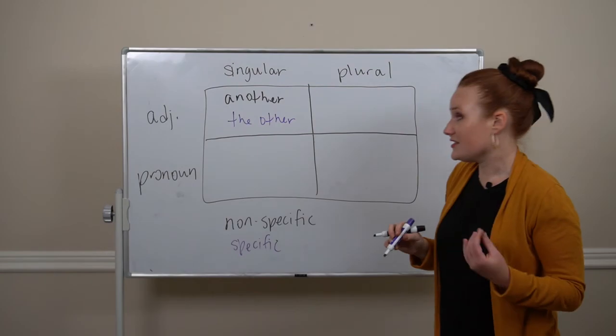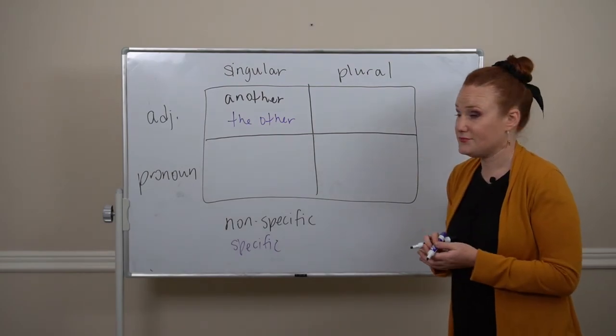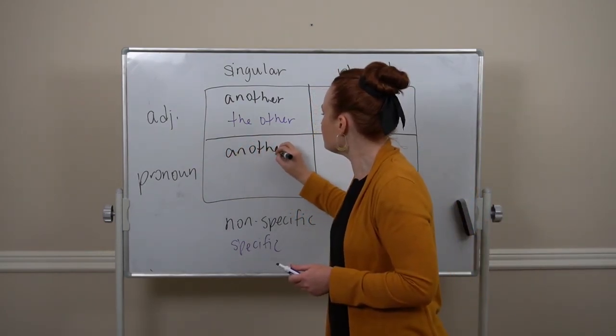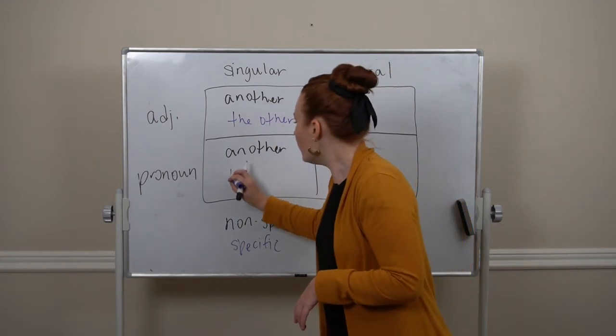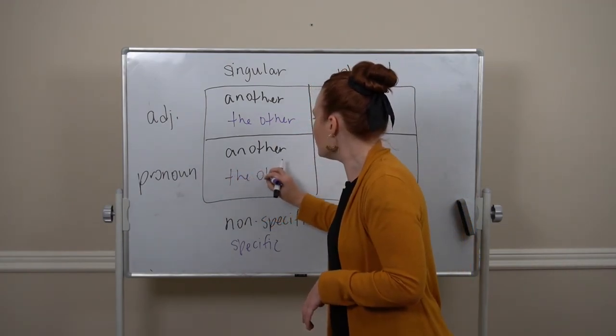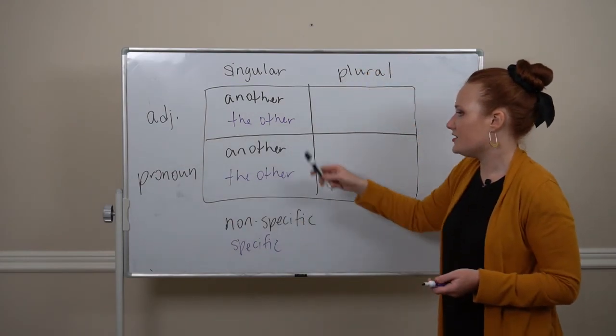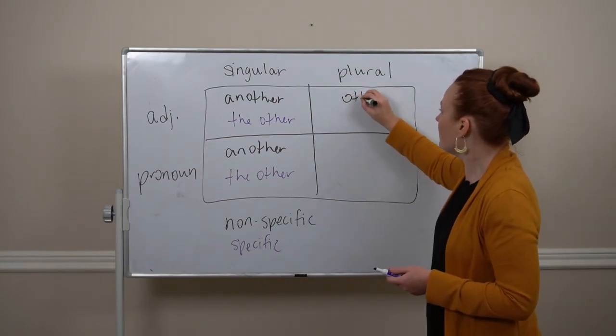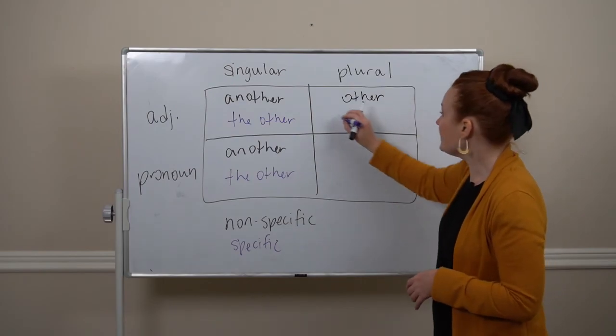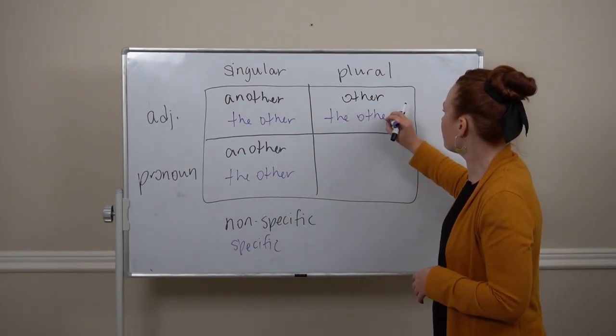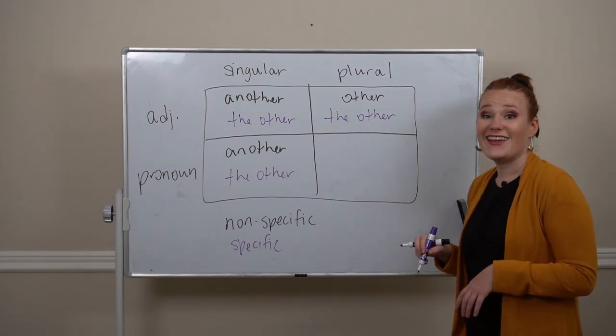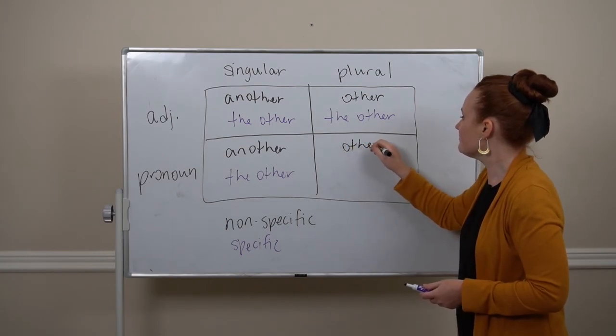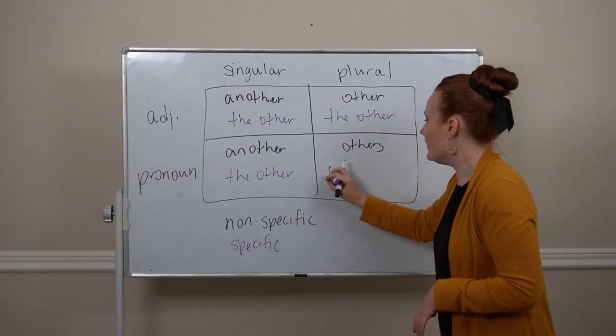Another is non-specific, the other is specific. Singular pronouns, another can be a singular pronoun or the other can be a singular pronoun, non-specific, specific. Plural adjectives, other is non-specific, the other is specific. And finally, plural pronouns, others is non-specific and the others is specific.